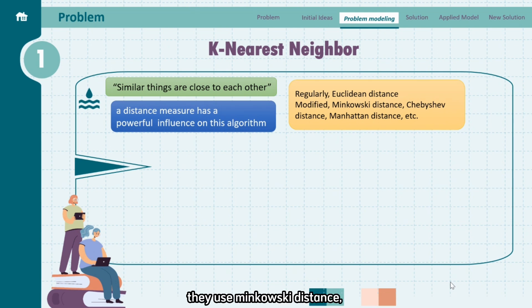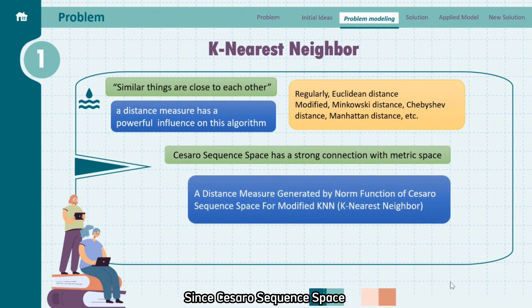Since Cesaro sequence space has a strong connection with metric space, why don't we try to generate a distance measure by norm function of Cesaro sequence space for modified K-nearest neighbor?